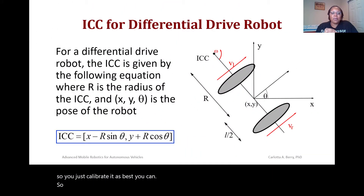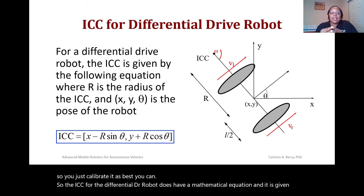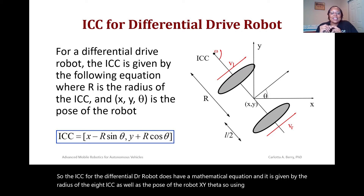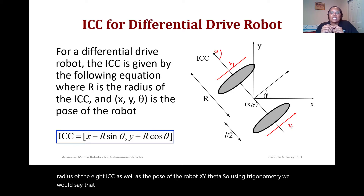The ICC equation is given by the radius of the ICC as well as the pose of the robot: x, y, theta. Using trigonometry, we say that the ICC is equal to x minus R·sin(θ) for the x-component, and y plus R·cos(θ) for the y-component.